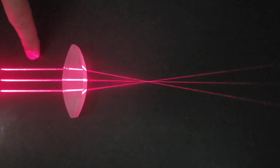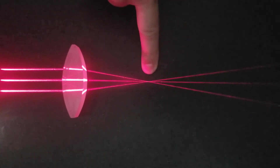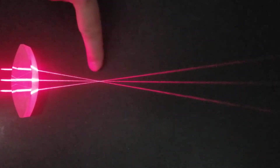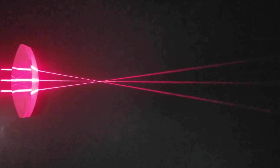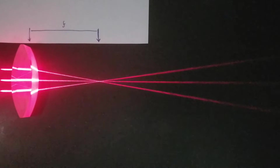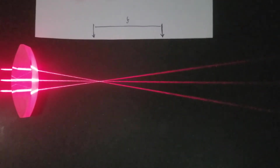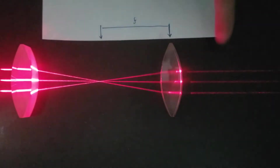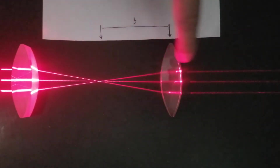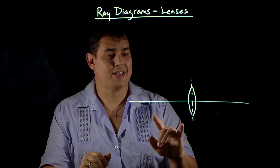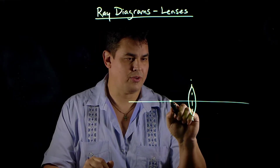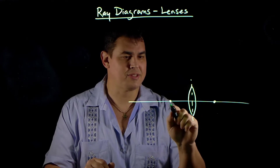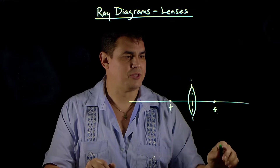Every lens has a focal point, which determines how the lens behaves when you put it in front of things. Any ray of light that comes in parallel to the lens will cross out through the focal point. By Snell's Law, the converse is true: any ray that comes through the focal point goes out parallel. A lens has two focal points, and I'm going to draw them the same distance on both sides.